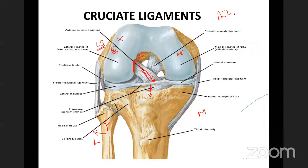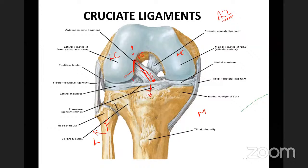MCQ question: the anterior cruciate ligament is attached to which condyle? The lateral condyle. Which surface? The medial surface. Which end? The posterior end. So the anterior cruciate ligament is attached to the posterior end of the medial surface of the lateral condyle of the femur.